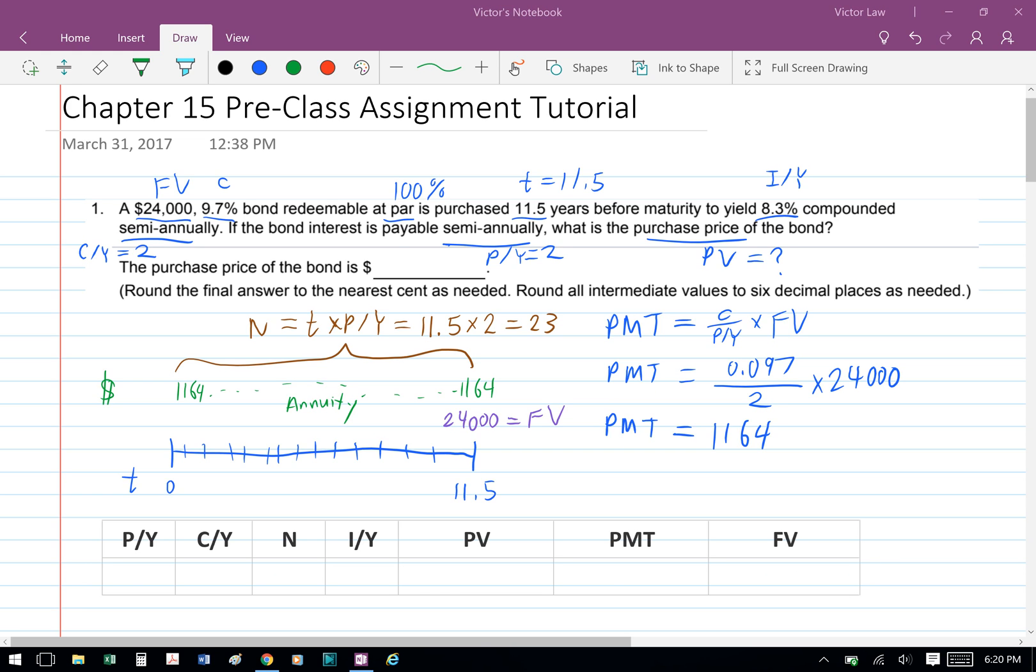From a timeline perspective, there are two types of cash flow here. The first type is the annuity, the second type is the future value. So for the annuity, there are 23 payments of 1164 every 6 months. As for the future value, you're getting $24,000 at the end of 11.5 years.